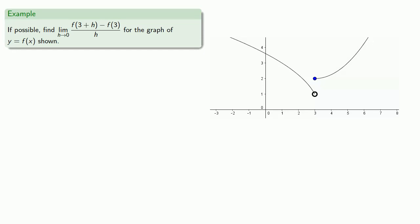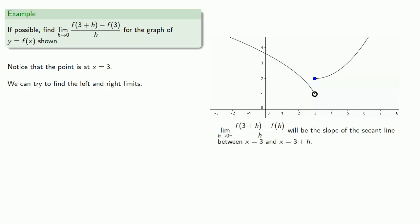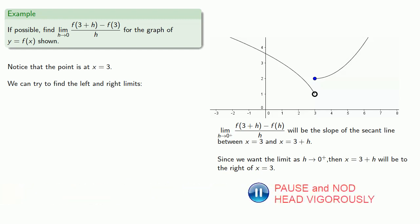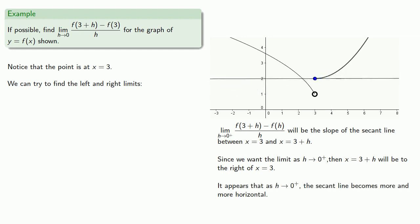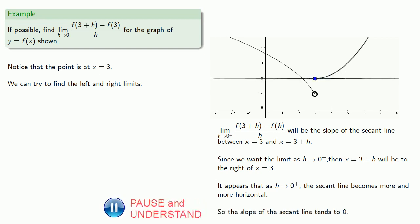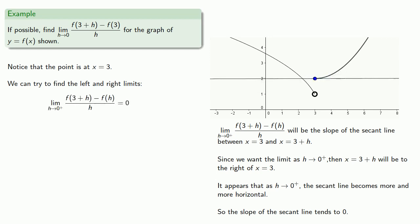What about a graph like this? Notice that the point is actually at x equals 3, so we can try to find the left and right limits. The difference quotient will be the slope of the secant line between x equals 3 and x equals 3 plus h. Since we want the limit as h goes to 0 from above, x equals 3 plus h will be to the right of x equals 3. As we let h go to 0, the secant line becomes more and more horizontal, so the slope tends to 0. The limit as h goes to 0 from above is 0.